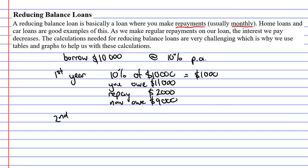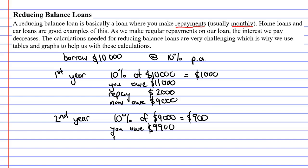Now we're going to go into the second year. What are we going to owe at the end of the second year? Now we need to find 10% of $9,000 this time, which is $900. When you add your interest to your $9,000, you'll find out that you now owe $9,900. But once again, we're going to make a repayment. Usually your repayments will stay the same, so we'll say it's $2,000 again. After you have made your repayment, you now owe $7,900.